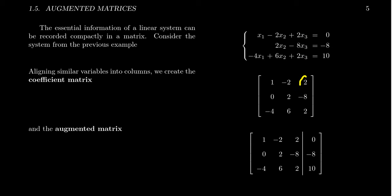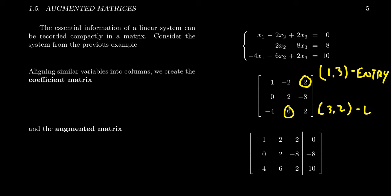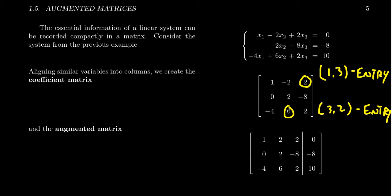When you have an entry in a matrix you always refer to its position by row then column. For example, the one-three entry means first row, third column; the three-two entry means third row, second column. This is the coefficient matrix — it just keeps track of the coefficients of the variables.